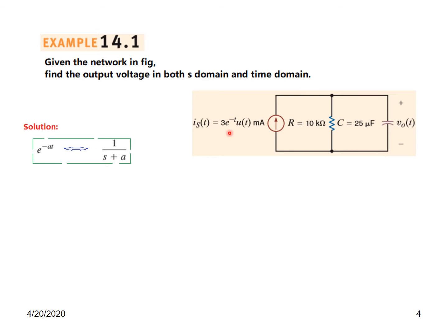Our input is in the shape of e raised to the power minus t. We will convert the input into Laplace form: 3 e^(−t) milliampere. So 3 milliampere will be 0.003, and e^(−t) from this formula will be 1 over (S + 1). So this whole thing in S domain will be 0.003 divided by (S + 1).